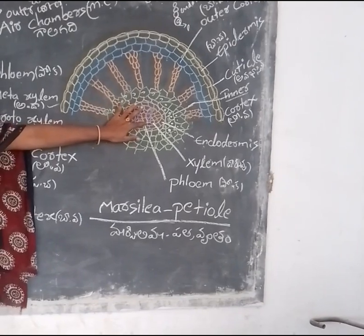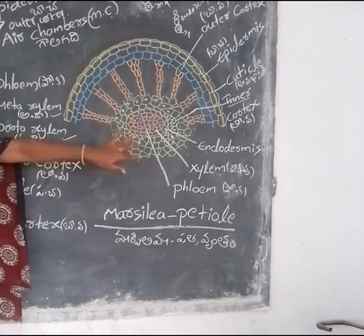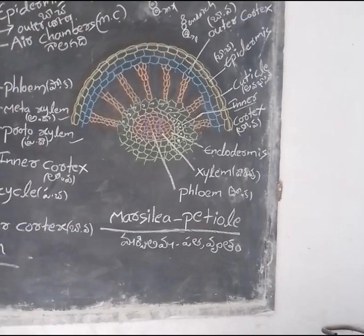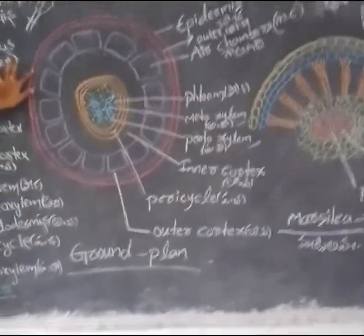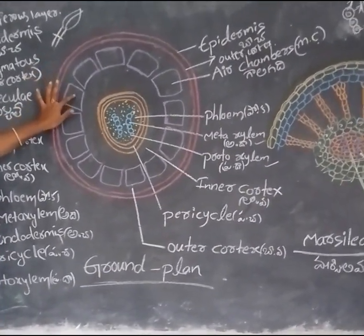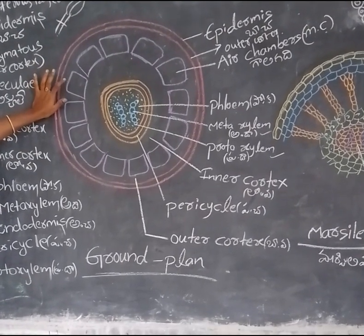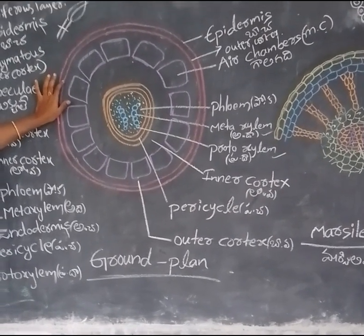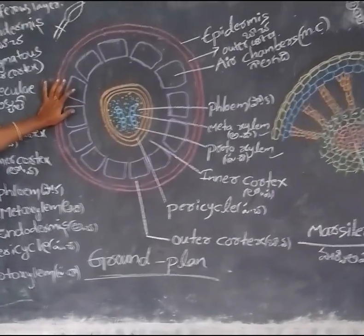Protoxylem is present at the ends — that's why it is called exarch. This is the ground root plant structure. This is the outer layer called Epidermis, and below the Epidermis, Cortex is present — outer Cortex, middle Cortex, and inner Cortex. The outer Cortex is made up of aerenchyma and the middle Cortex is made up of parenchyma.